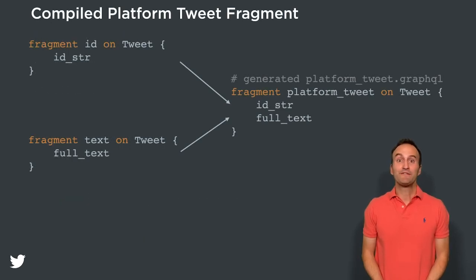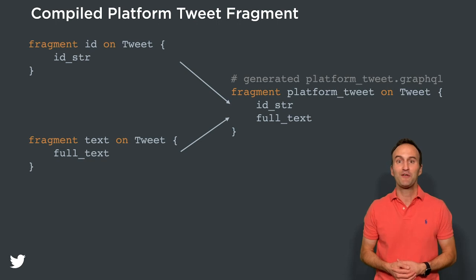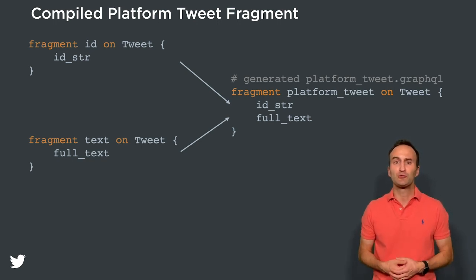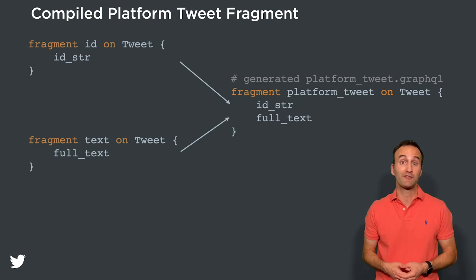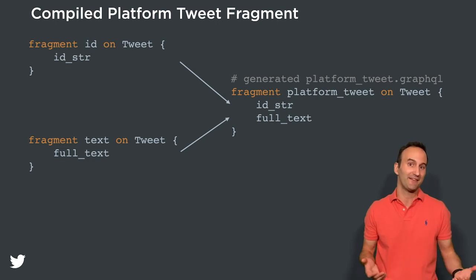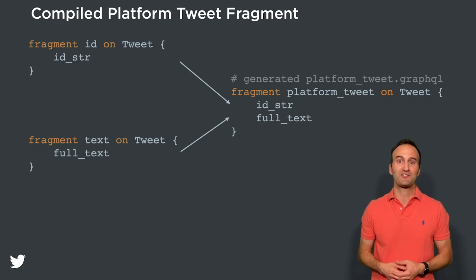At this point we've defined two fields on a tweet. At the top left you can see the GraphQL fragment for retrieving the id string field, and below it the GraphQL fragment for returning the full text field. Part of the platform's build process is to read through the entire config directory and generate platform fragments that can be used whenever a tweet needs to be rendered. We can now issue a single GraphQL query with the platform tweet fragment, instead of needing two separate GraphQL queries. We can see the key role that GraphQL plays in our component-based architecture, as we utilize GraphQL fragments as our unit of rendering reuse.